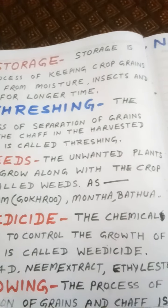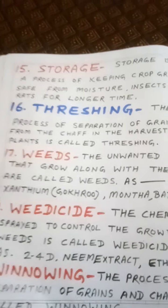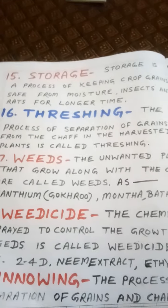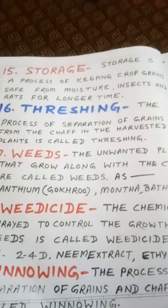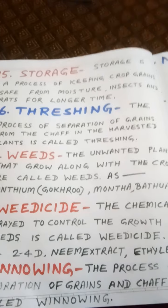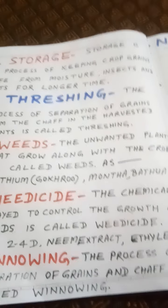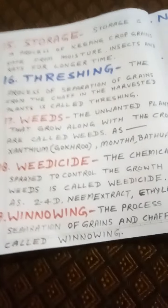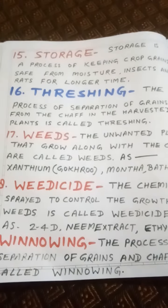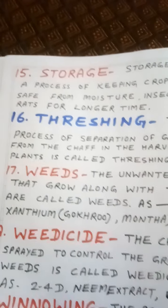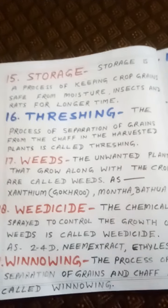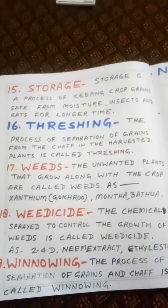Next keyword: Storage. Storage is the process of keeping crop grains safe from moisture, insects, and rats for a longer time. Warehouses (godowns) are built to store grains like wheat for a long period, protecting them from pests, weevils, and moisture.